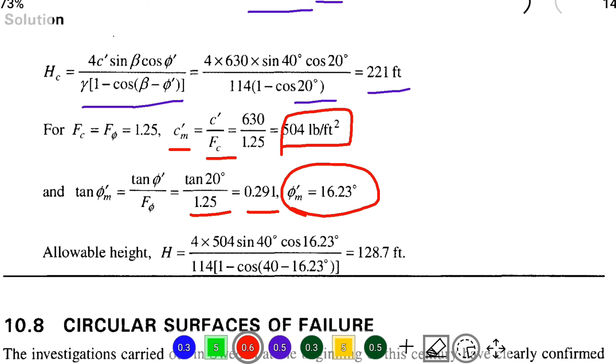After that we can substitute all the values, the mobilized cohesion value and φ_m value into the formula. So that is H_c equal to 4 times C_m times sin β times cos φ_m divided by gamma times 1 minus cos(β minus φ_m).